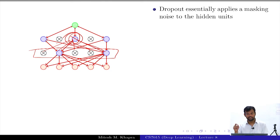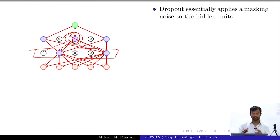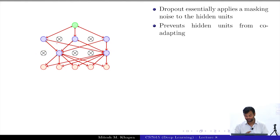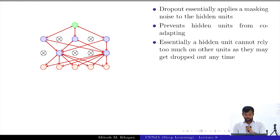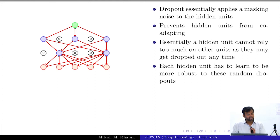The more technical term is that dropout does not allow neurons to co-adapt. It does not allow them to reach a mutual agreement like 'you take care of certain things and I will take care of others.' Each hidden neuron has to learn to be more robust — it has to do the job as if it is the only one responsible.